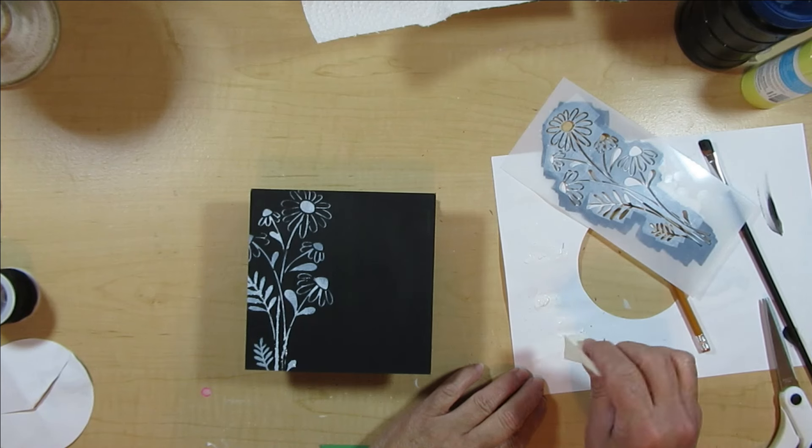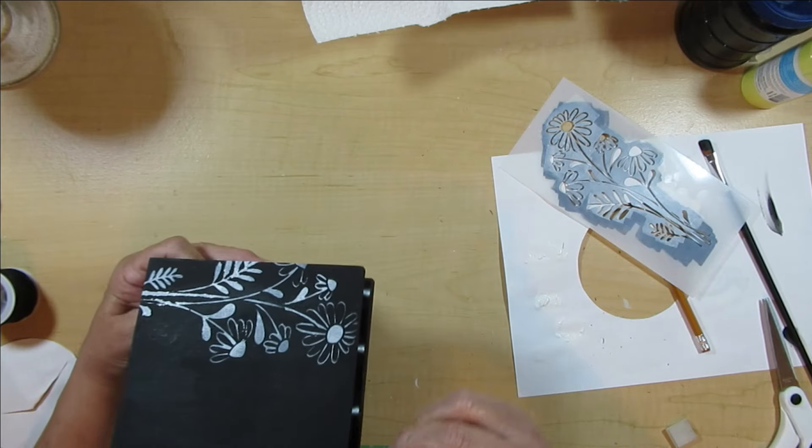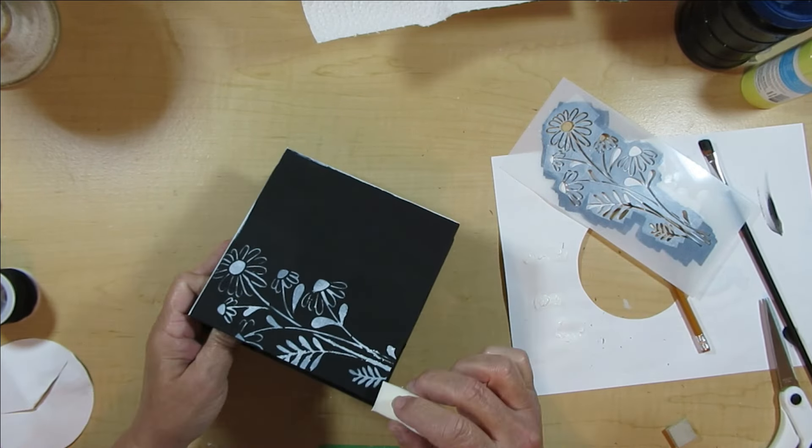To frame this out a little bit nicer, I'm using the sponge again and I'm just going to drag it along each of the edges. That gives it more of a finished look.